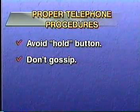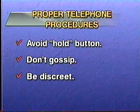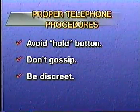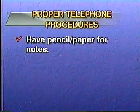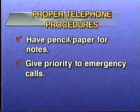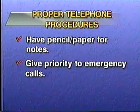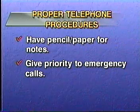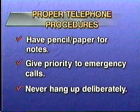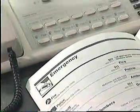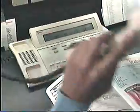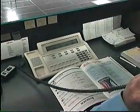Number six, do not engage in idle talk or gossip or tie up the phone unnecessarily — this is not professional conduct. Number seven, always be discreet and never violate a confidence on the phone. Number eight, make sure you have pencil and paper and are ready to take notes or messages as needed. Number nine, always give priority to emergency calls — when asking for emergency aid, give complete information as well as directions. Number ten, never hang up on someone deliberately. All emergency numbers should be kept close at hand or committed to memory — your supervisor, the fire department, local police, ambulance service, and emergency medical technicians. Keep these numbers handy or post them by every phone at your work site.